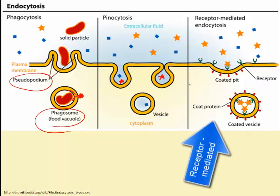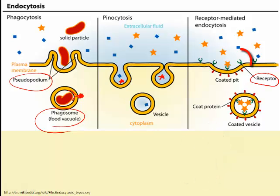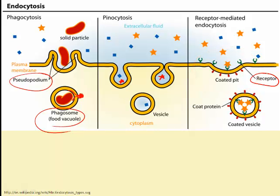Receptor-mediated endocytosis is considered discriminating. It involves specific receptor proteins in coated pits, and the coated pits bud inward. These receptors bond only with the specific desired molecule. It results in far fewer undesired molecules inside the vesicle and helps bring in bulk quantities of the desired molecules, making it more efficient than non-discriminating pinocytosis. It can bring in particles even if they are not in very high concentration outside the cell.